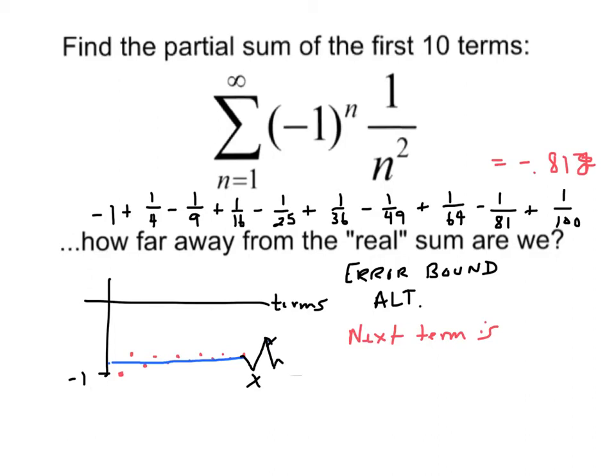And again, this is a bound. We're not actually saying what the error is. We're saying the error can't possibly be more than blank. So the next term for us would be 1 over 121. That would be 1 over 11 squared. So we're not going to be more than 1/121st away. This is our error bound. It's just because we can't bounce further than that 1/11 squared away with the next term.